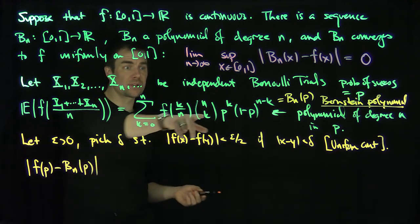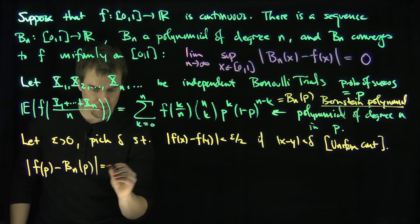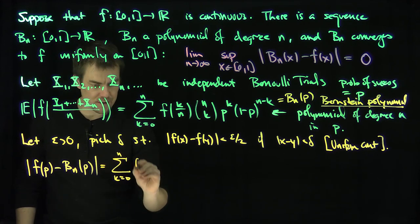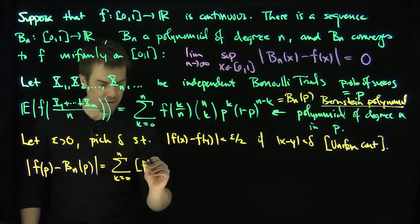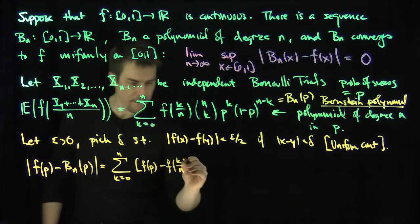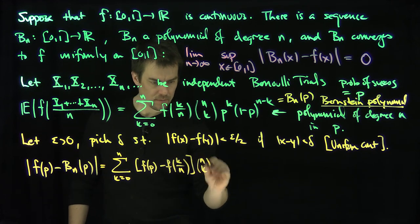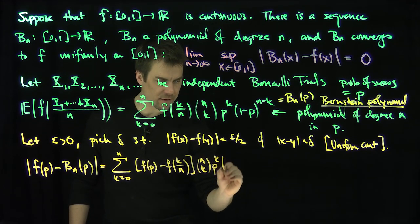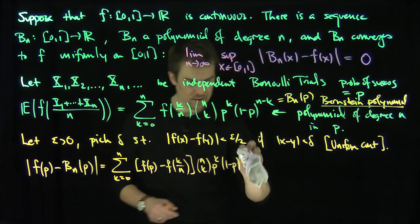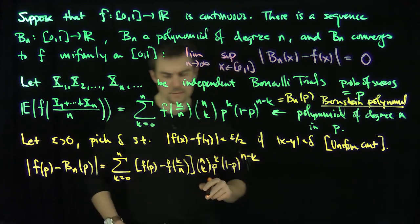This is a probability measure, so I can put that into the sum. This is exactly equal to the sum, k goes from 0 up to n, of just the difference of f(p) and f(k/n), and then I'm going to have n choose k p^k (1-p)^(n-k).